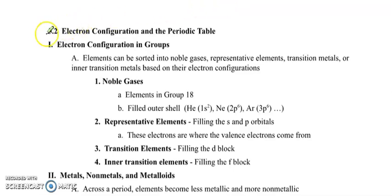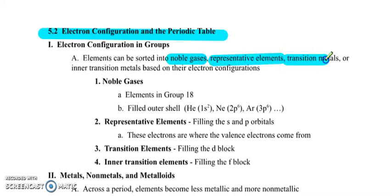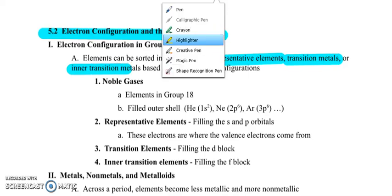Let's move on to section 5.2. Electron configurations and the periodic table. So electron configuration in groups. Elements can be sorted into noble gases, representative elements, transition metals, or inner transition metals based on their electron configurations.